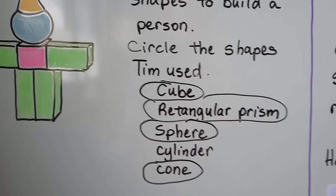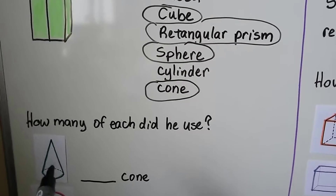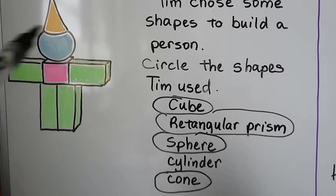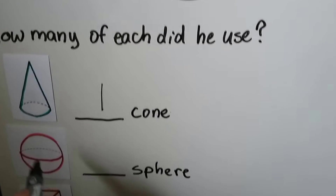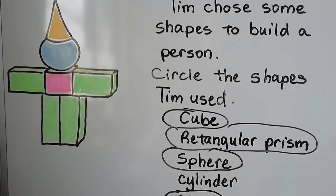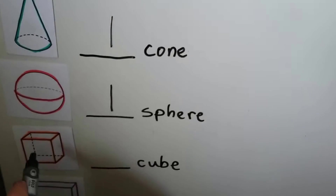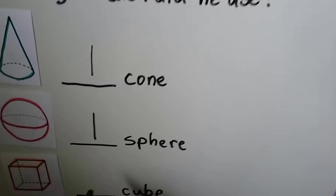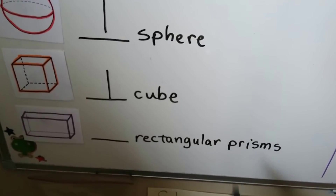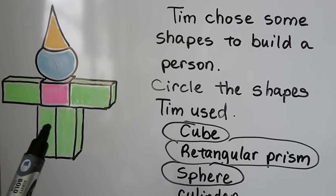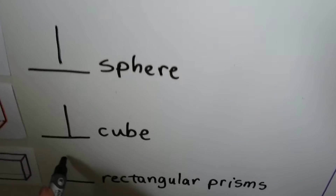So those are the shapes he used. How many of each did he use? How many cones? Just one for the hat — so there's one cone. How many spheres? Just one for the head. How many cubes? I see one cube for the body. How many rectangular prisms? Let's count: one, two, three, four — he used four rectangular prisms.